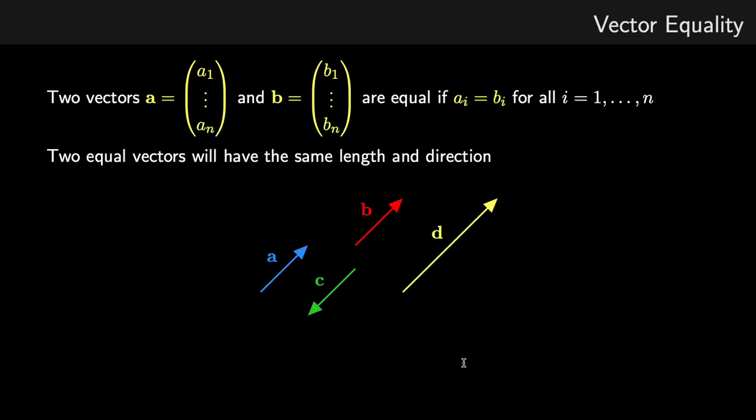So now I'm going to look at some basic arithmetic operations. If we have two vectors A and B, we say that these are equal if the corresponding elements, so if the i-th element of A is equal to the i-th element of B for all elements within our vectors.